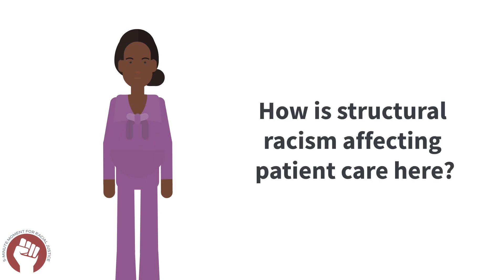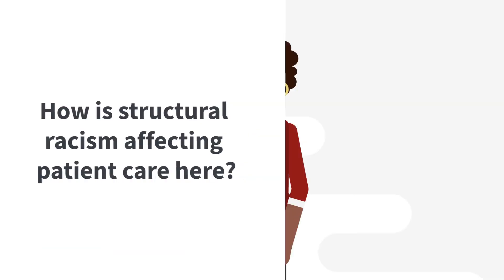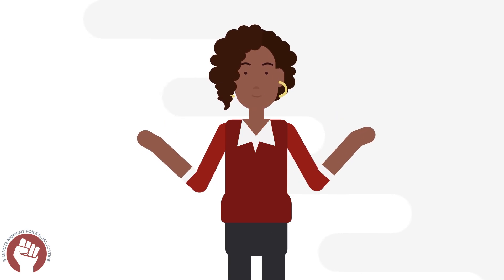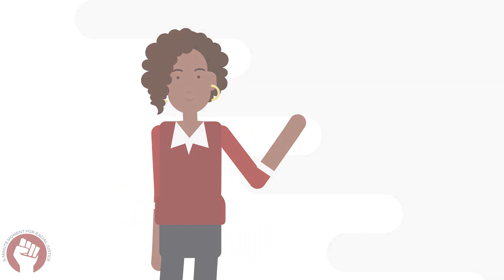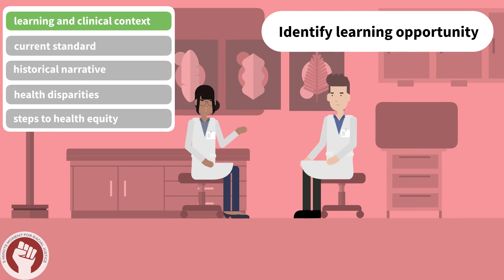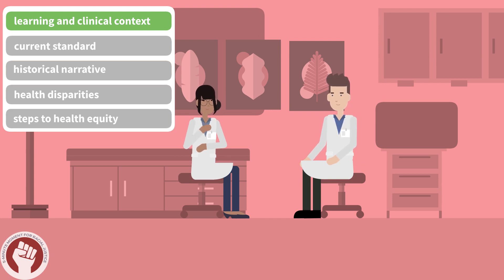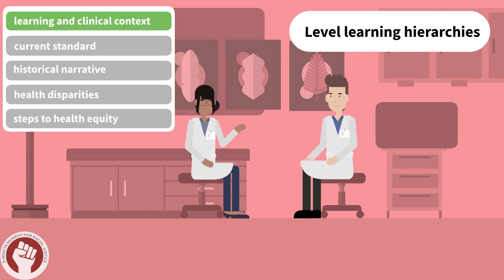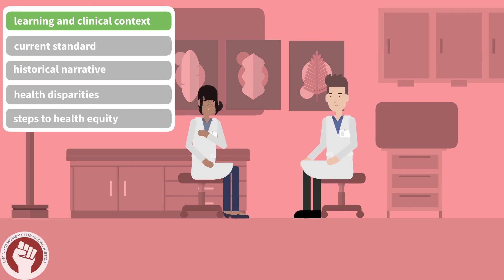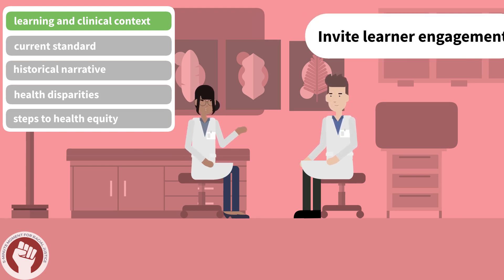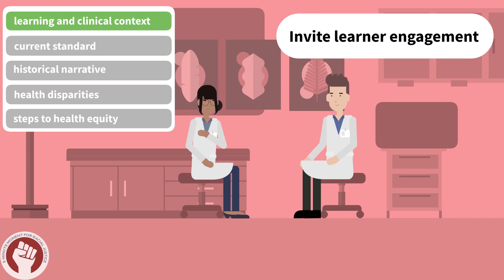How are structural racism and implicit bias affecting patient care here? These conversations are tough to have. Let's watch how two clinicians navigate this discussion. This is a good opportunity for us to talk about how pregnancy-associated complications and mortality differ across races and what we can do as providers to reduce these disparities. Has anybody ever talked with you about this before? This was never taught to me during my training, but it's important for us to be aware so that we can practice as equitably as possible. Let's spend a few minutes talking about this — I would love to hear your thoughts as well.